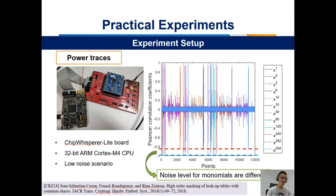Here is our experiment setup. Power traces are collected using a ChipWhisperer LiteBoard, and the code runs on an ARM Cortex-M4-based microcontroller. The leakage is shown, and we find it clearly has a low noise level, but the noise levels for different monomials are also different, which will affect the attack results.